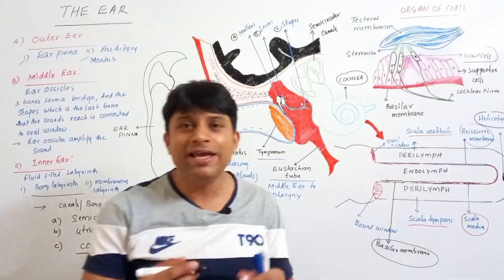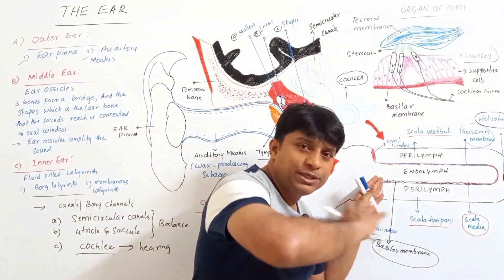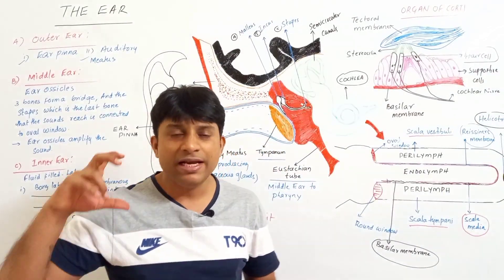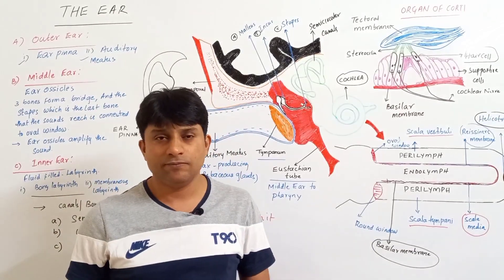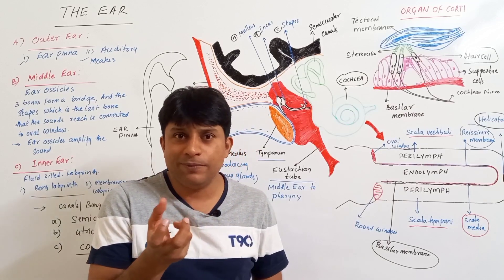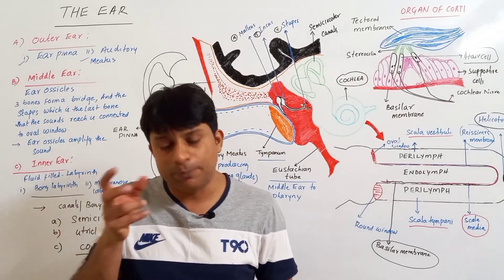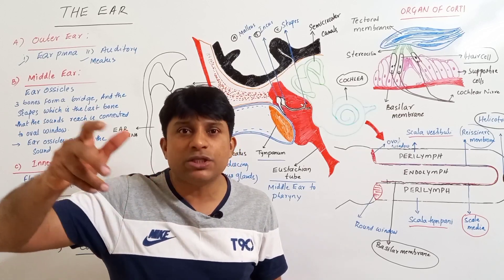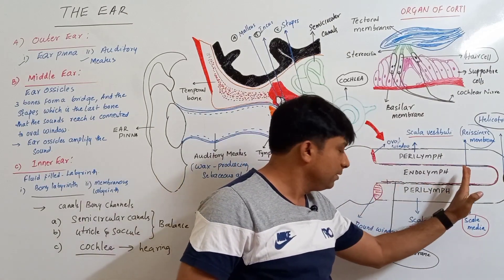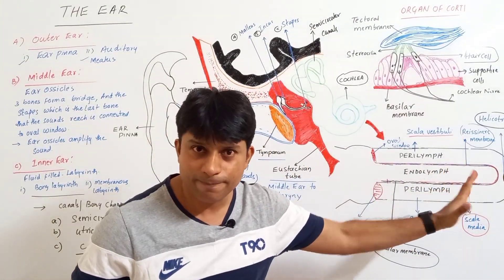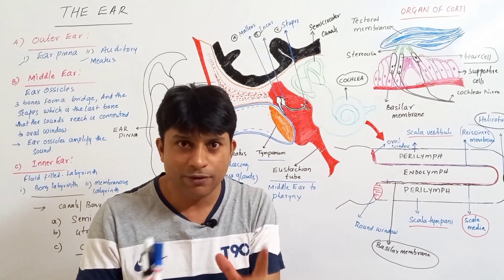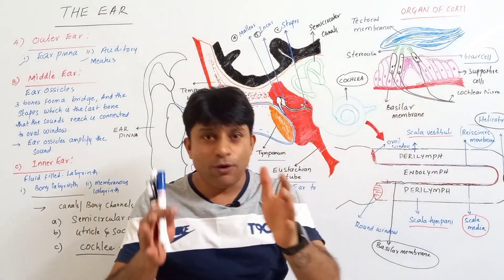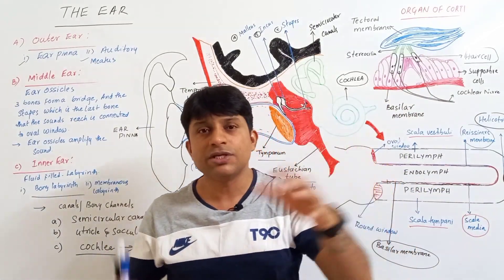All the hair cells along the length of the basilar membrane are responsible for receiving different frequencies of sounds. For example, a sound of 200 Hz and a sound of 500 Hz are received by different hair cells located on the basilar membrane. Different frequencies of sound waves are received by different hair cells.